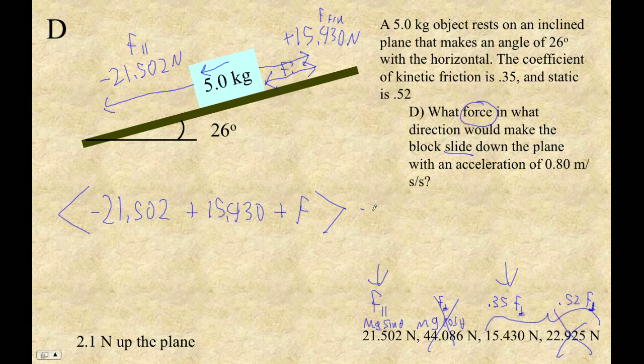So plus F equals 5.0 kilograms. And then this acceleration, it's down the plane. Let's assume that the acceleration is also down the plane. So the acceleration is negative 0.80 meters per second squared.